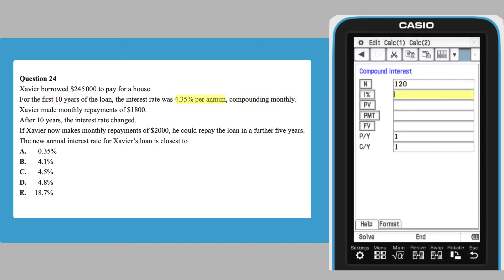The interest rate as a percentage, which is 4.35, and the PV or present value as $245,000. Press Execute between these entries.